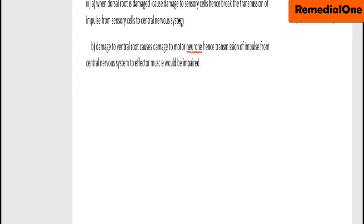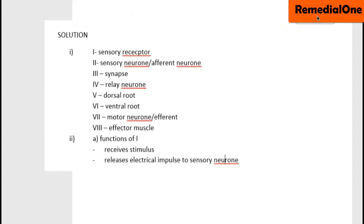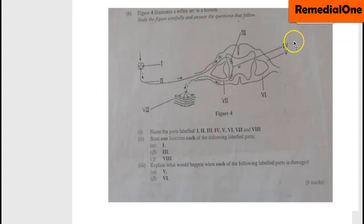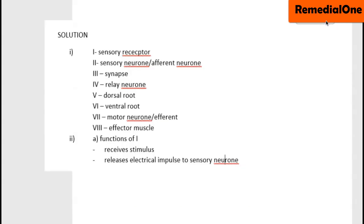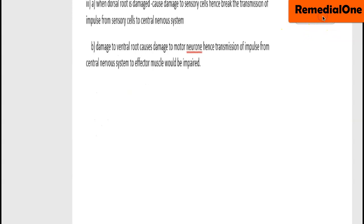What about damage to the ventral root? The ventral root is Part VI. Whenever the ventral root is damaged, it means that transmission of impulse from the central nervous system to the effector muscle would be impaired.